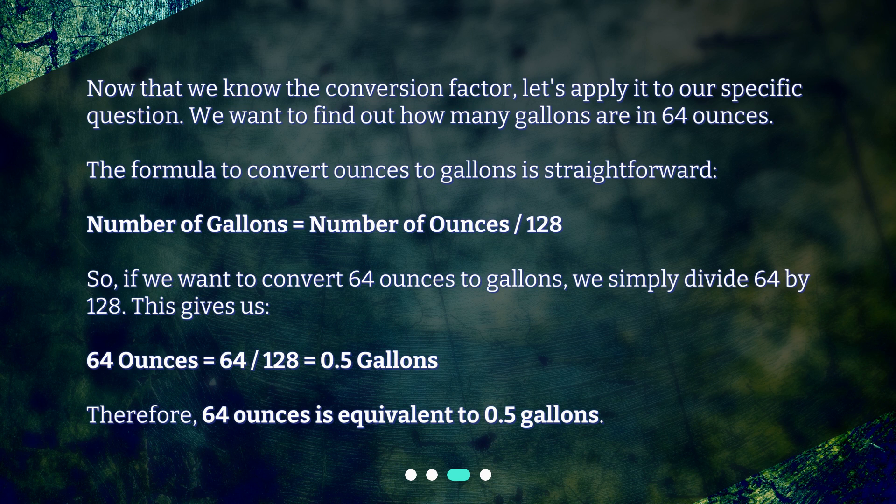This gives us: 64 ounces equals 64/128, which equals 0.5 gallons. Therefore, 64 ounces is equivalent to 0.5 gallons.